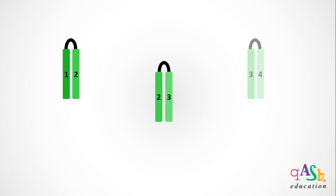The formation of these three hairpin loop structures conveys specific signals for the transcription of the tryptophan operon genes. The hairpin structure between segments 1 and 2 conveys the signal for pause of transcription. Segments 2 and 3 convey the signal for anti-termination of transcription. The hairpin loop structure between segments 3 and 4 conveys the signal for termination of transcription.